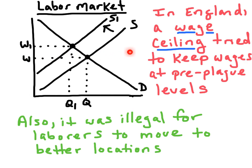So they didn't want farmers to earn what they were worth in the labor market. This helped a little bit in terms of keeping wages low; however, it also led to a shortage of workers. Because of the potential shortages of labor that happened from price ceilings, the government also made it illegal for farmers — the laborers — to move to better locations. They were tied to the land, which makes sense when you're working with the manorial system and the serfdom that was still in place during the Bubonic Plague.